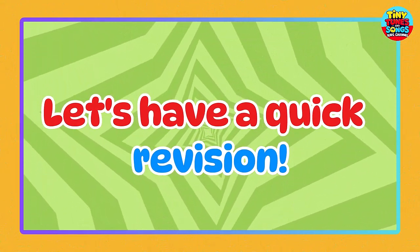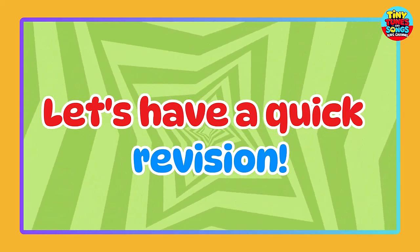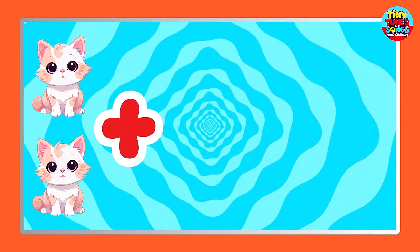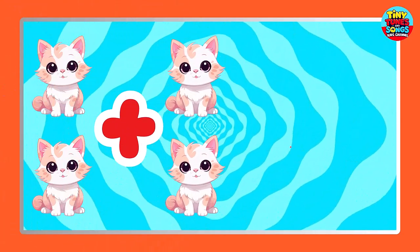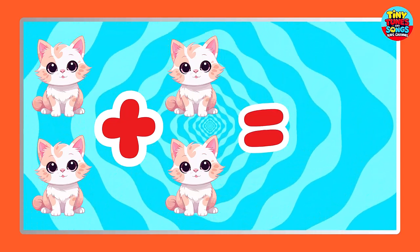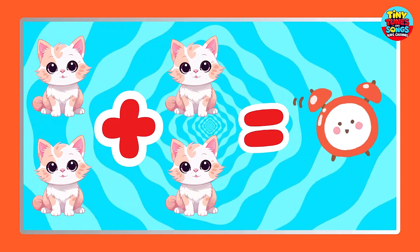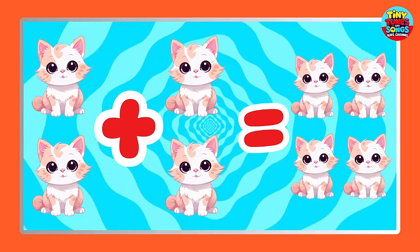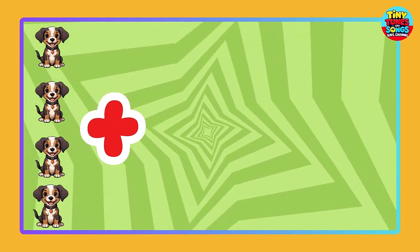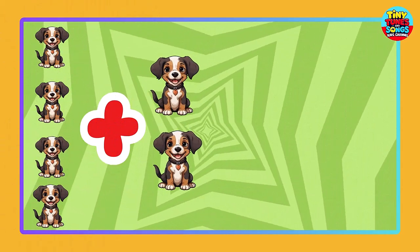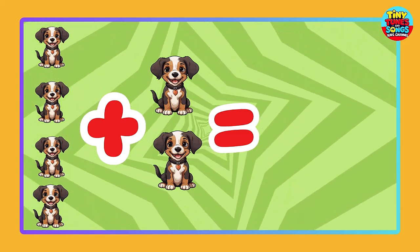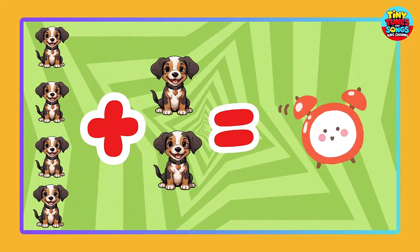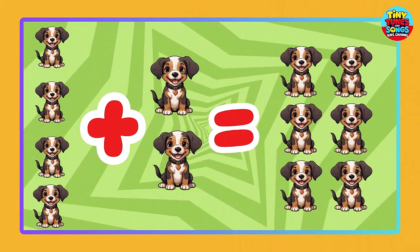Let's have a quick revision. 2 cats plus 2 cats equals — can you guess this total? 4 cats plus 2 dogs equals — can you guess this total? 6! Great job!